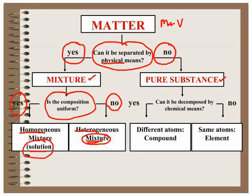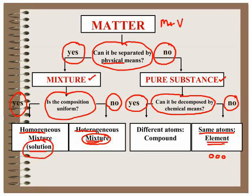If it is a pure substance, you decide if it can be decomposed further by chemical means. If you cannot decompose it anymore by chemical means, then it must contain the same atoms and it is an element, all the atoms the same. If you can decompose it by chemical means, then it contains different atoms and it is a compound.